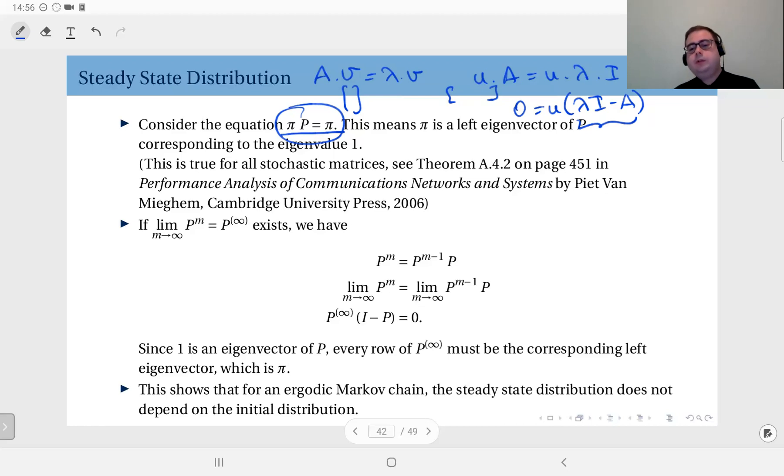But here I'm not going to go into those details. The fact that you have this equality shows us that π is a left eigenvector of matrix P corresponding to the eigenvalue 1.